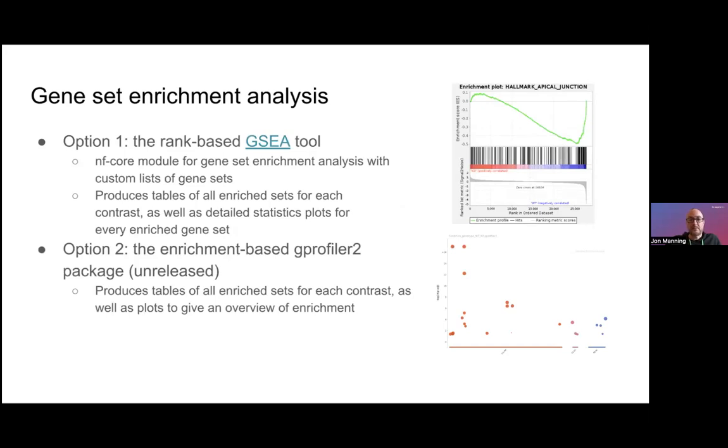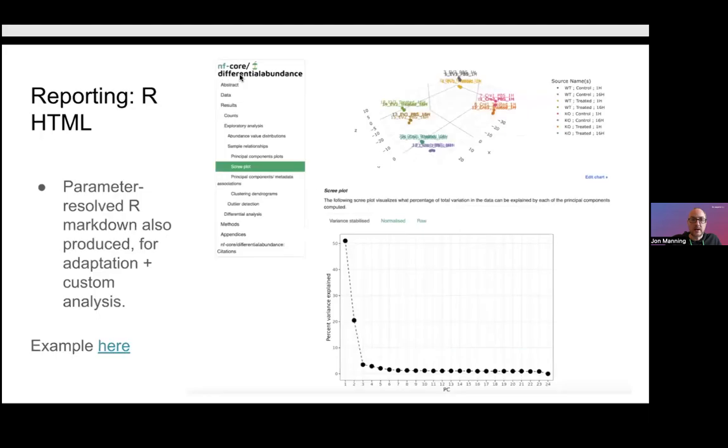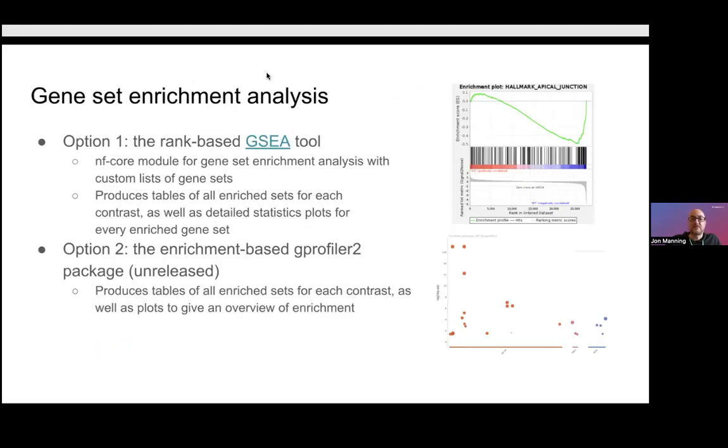Downstream of the differential stuff we have gene set enrichment analysis. We've had the GSEA tool in here for a while. That's just the wrapper around the Broad's GSEA tool, and that's not based on thresholding of genes, it's just based on ranked gene lists in the data. So that's a good way to go. But also Oscar has incorporated this gProfiler2 method into the pipeline recently. It's unreleased, so it's not in a released version of the workflow right now, but that is based on thresholds, so it takes gene sets and compares them against background.